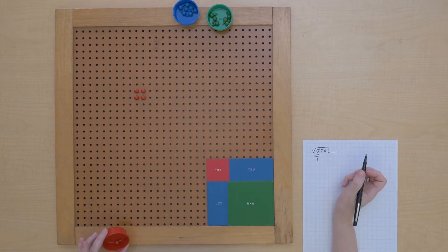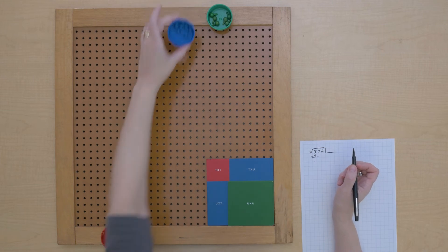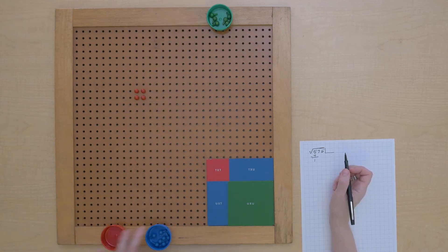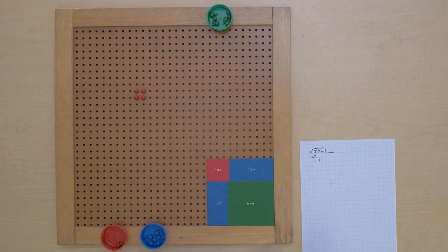Which we do. And now we're going to bring down our tens and let's bring that down on paper. So now I can see I have 17 tens to make these rectangles out of.